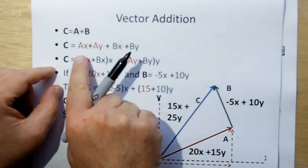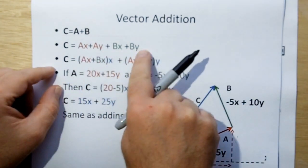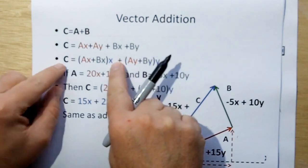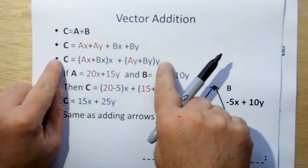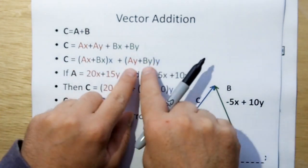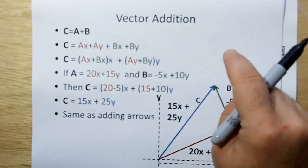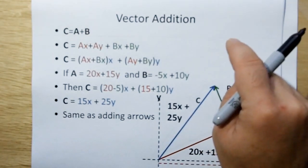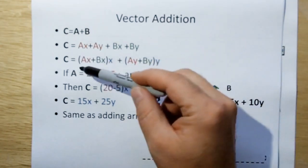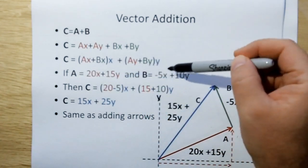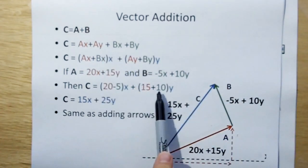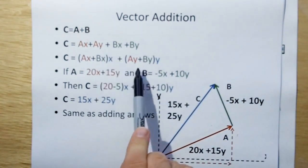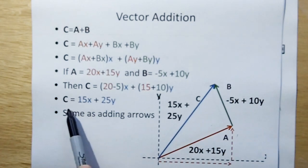So basically what you do is you add the components of A plus the components of B. The X for C is going to be the summation of the X components of A and B, and the Y component of C is going to be the summation of the Y components of A and B. I'm giving an example of vector A equals 20x plus 15y and vector B equals minus 5x plus 10y. We're going to go through that process here, and we get C equals 15x plus 25y.